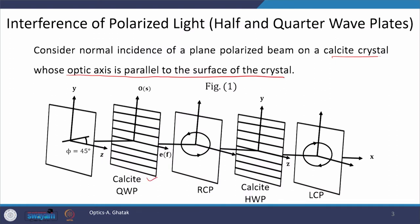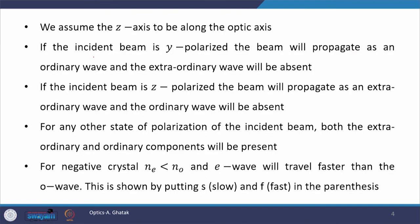This crystal is shown in figure number 1. You can see that the optic axis is parallel to the surface and it is pointing along the z-axis, which is coming out of the paper. The direction of wave propagation is the x-axis, the vertical axis is the y-axis, and the optic axis of this calcite crystal is along the z-axis. If we launch a beam which is y-polarized, let us see what happens.